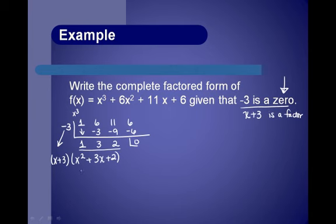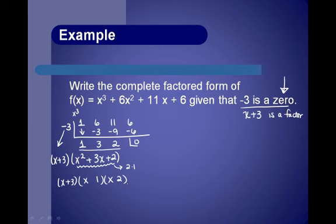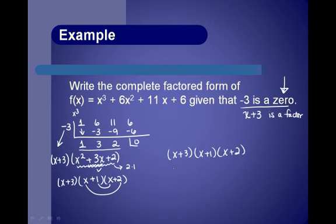We can factor that quadratic further. We know it's going to be two binomials of the form x and x. The last two have to multiply to give us 2 — our only choices are 1 and 2. It's positive 2, so both signs are either positive or negative. Since we need to add to get positive 3, we use both positives. Outer times 2 gives 2x; inner gives 1x — middle term is 3x.